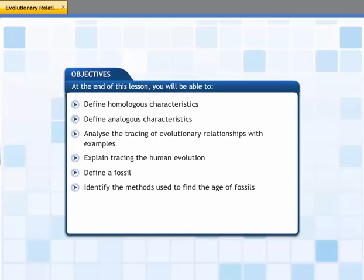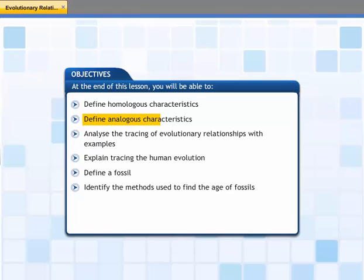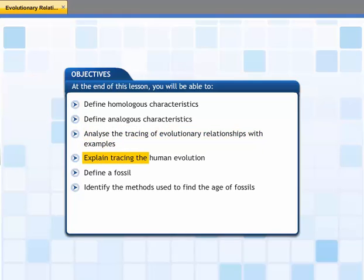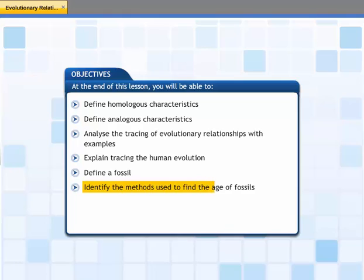In this lesson, you will learn about evolutionary relationships and human evolution. At the end of this lesson, you will be able to: define homologous characteristics, define analogous characteristics, analyze the tracing of evolutionary relationships with examples, explain the tracing of human evolution, define a fossil, and identify the methods used to find the age of fossils.